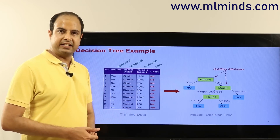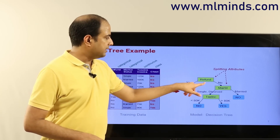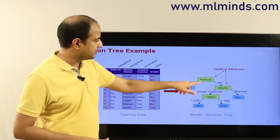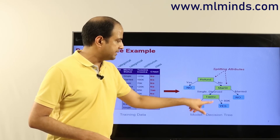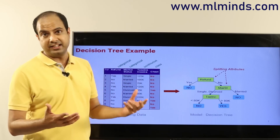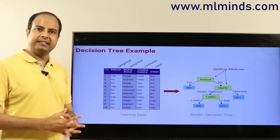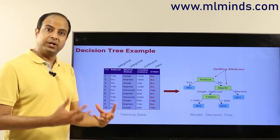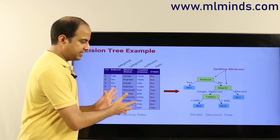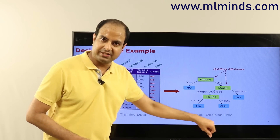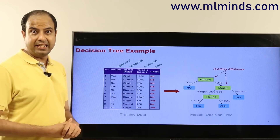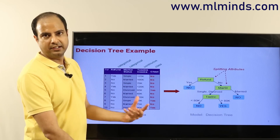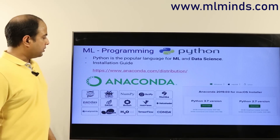An experienced person's business logic might be: if a refund was due, they're unlikely to cheat; but if no refund was due and the person is single or divorced with high income, there's a good chance of cheating. That business logic already exists in the experienced person's brain. The machine learning engineer approaches this differently — given this data, can we derive patterns and automatically extract this business logic? That's machine learning: from data, you derive the business logic automatically and learn something called a model.